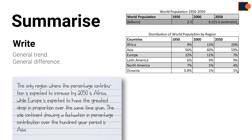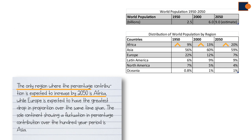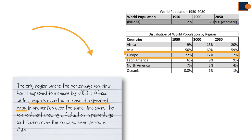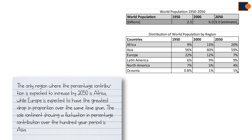Let's see a real example. Here in the sample, it states the only region that is expected to increase is Africa — meaning the rest of the regions are projected to go down. It also includes main changes: Europe is expected to have the greatest drop. So, mention the highest or the lowest change as a main difference.